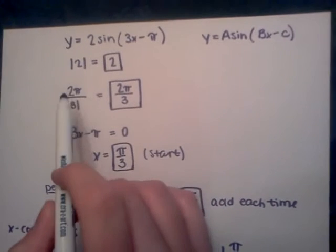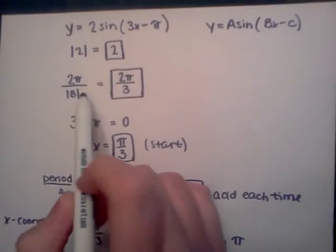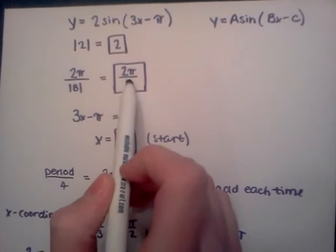To find the period, you do 2 pi over b. b is 3, so the period is 2 pi over 3.